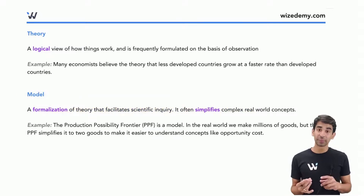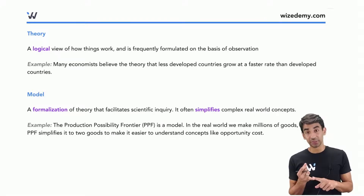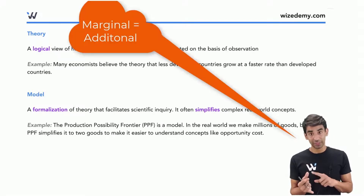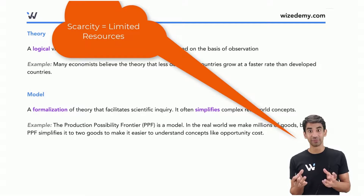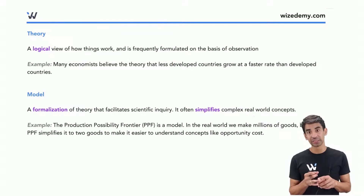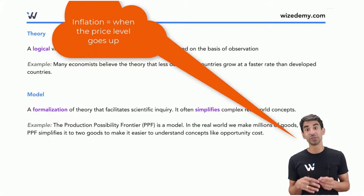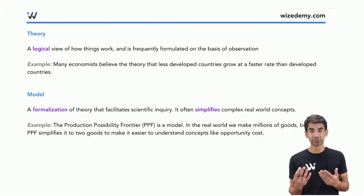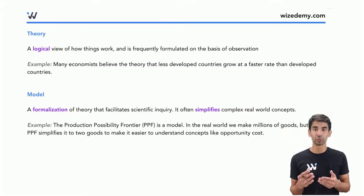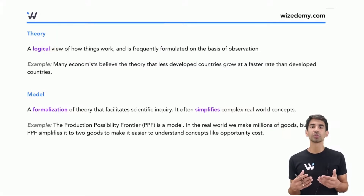The main takeaways from this chapter: marginal means additional, scarcity means we have limited resources, and inflation means when the price level goes up. The other definitions we covered will come up later on, but those are the main concepts you should know.